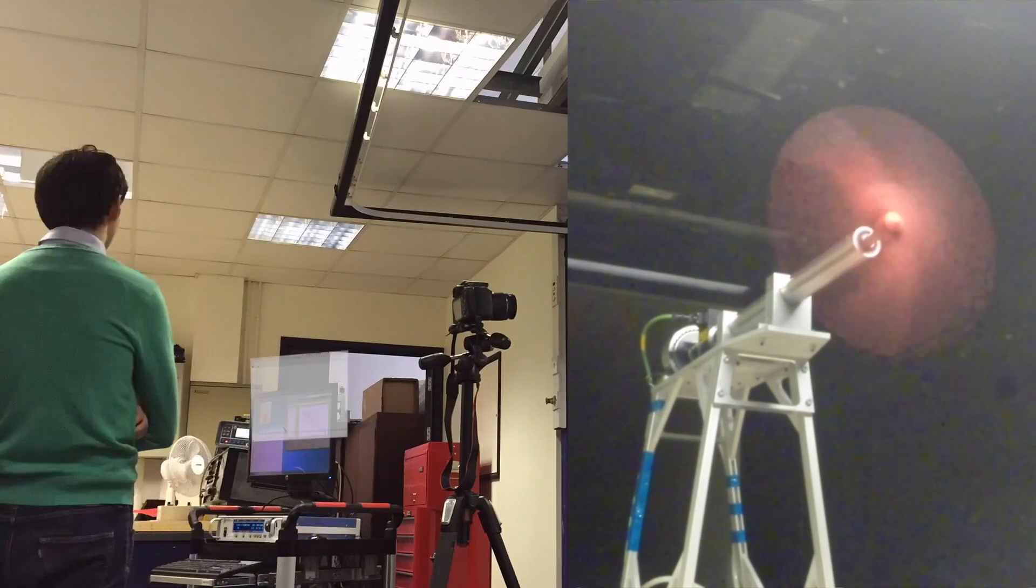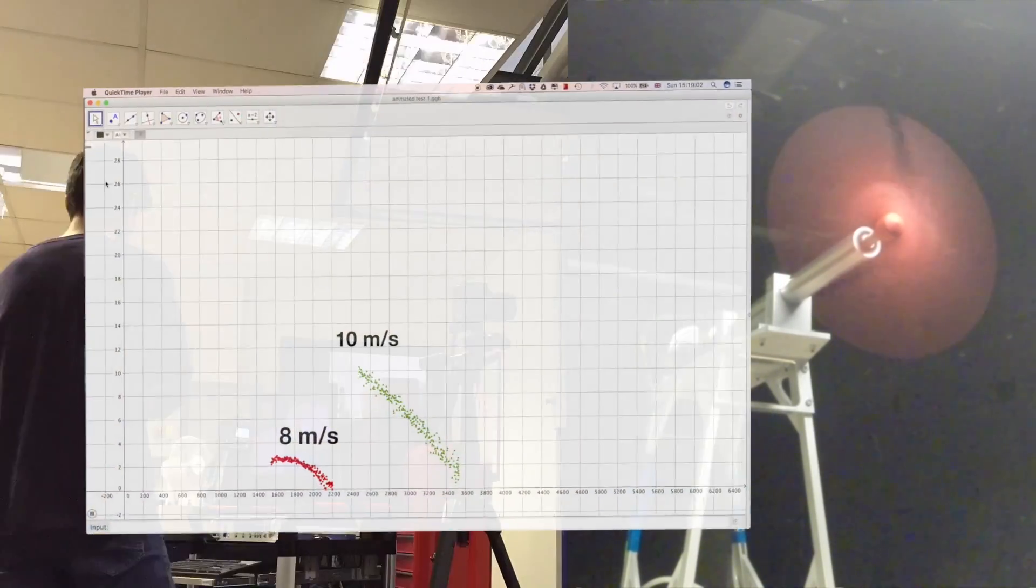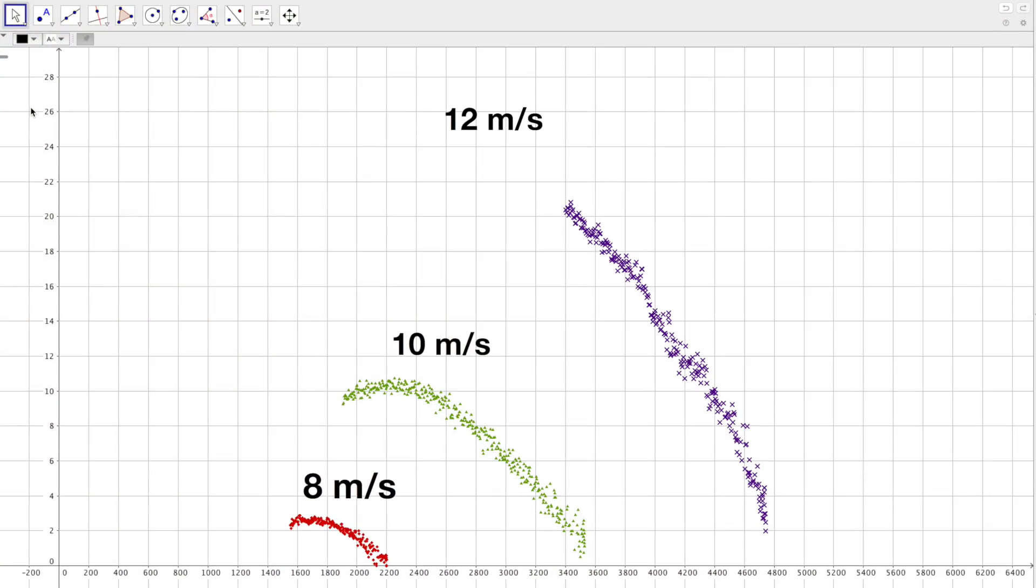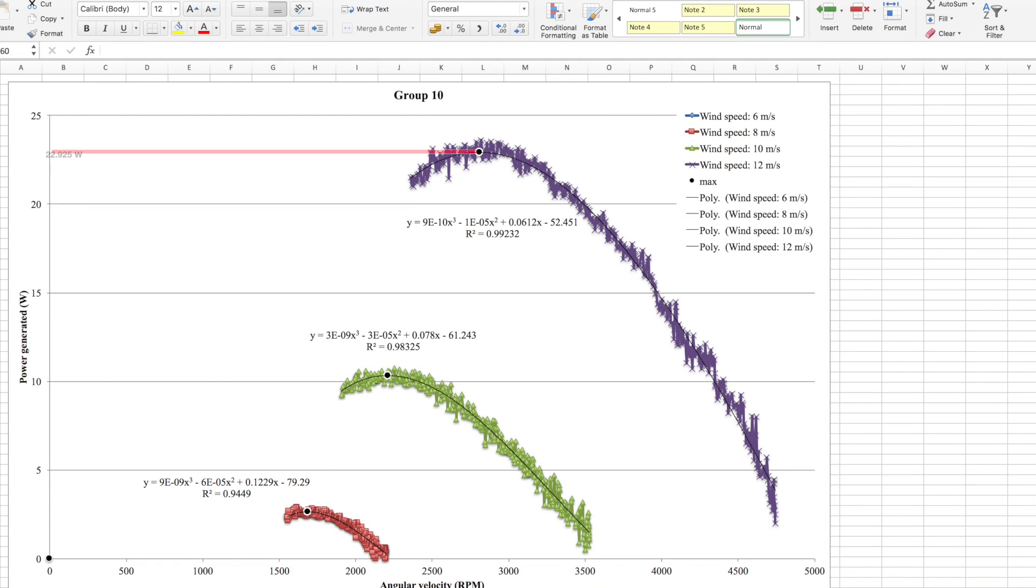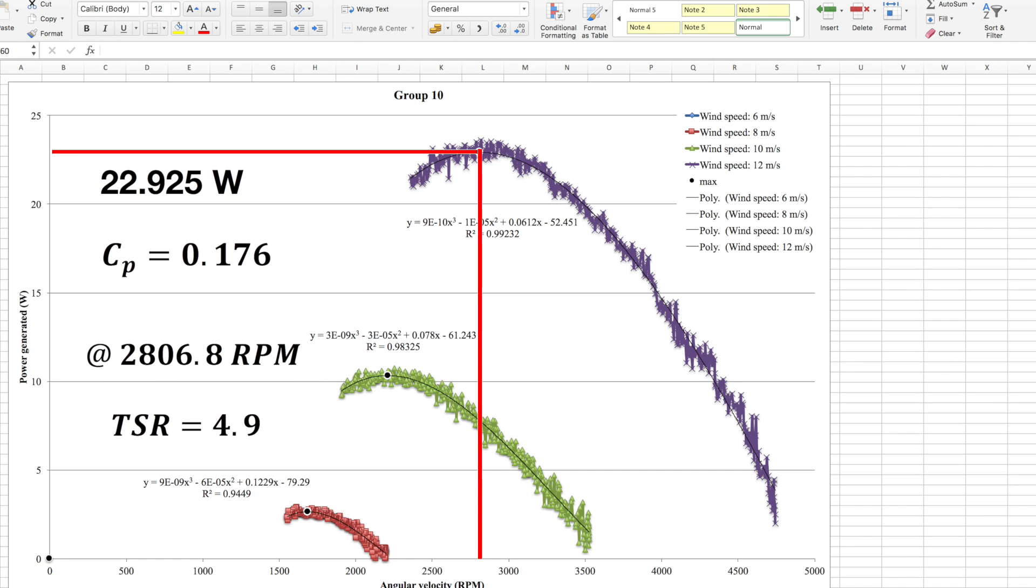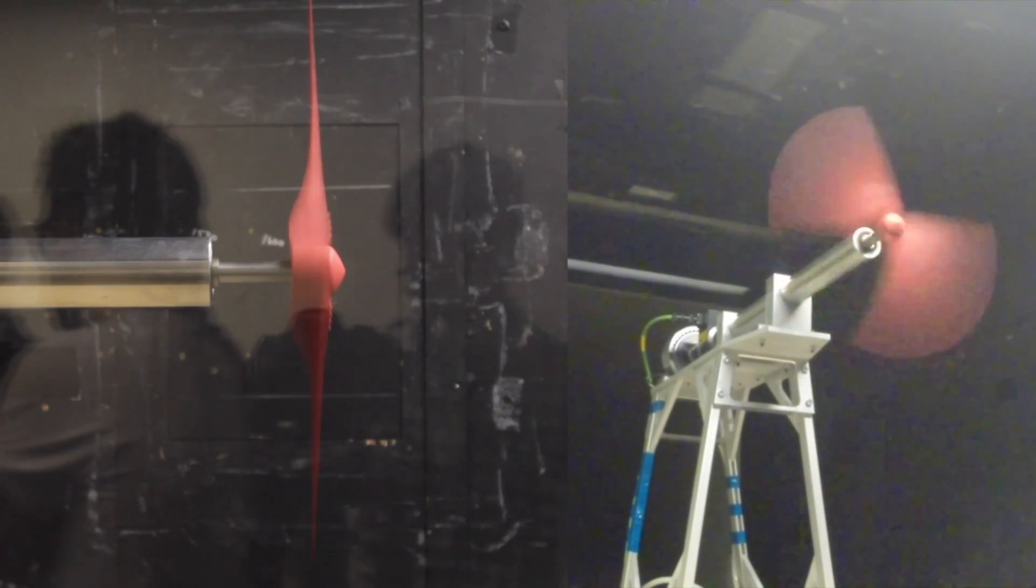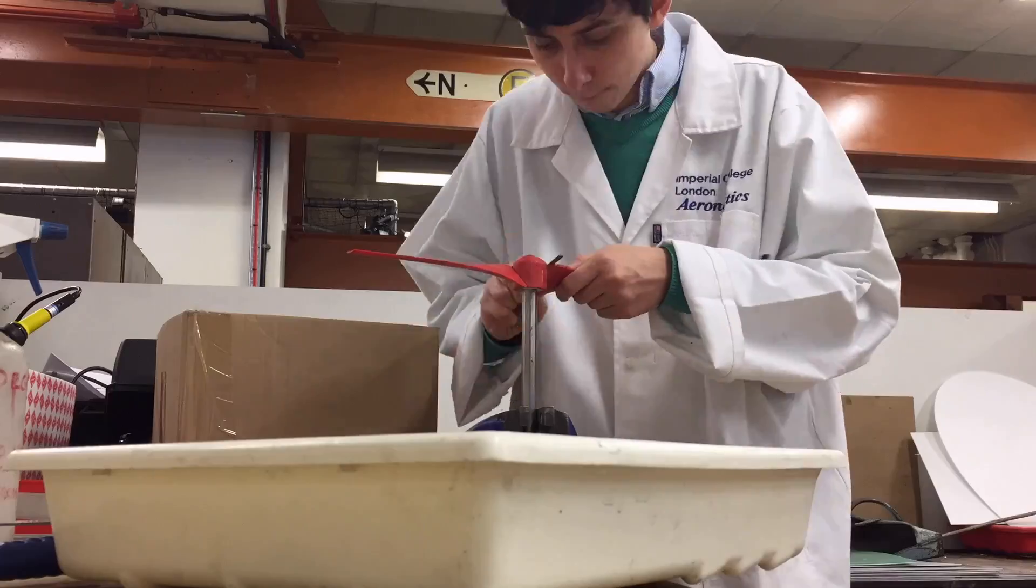Our turbine performed best in the 12 meters per second test which was the one it was actually optimized for. It achieved a maximum power output of 22.9 watts giving a power coefficient of 0.176. This maximum power was recorded at 2800 rpm or a tip speed ratio of 4.9 which was very close to our design TSR. At this point we were wondering what effect the tubercles were having on the performance of the blade.